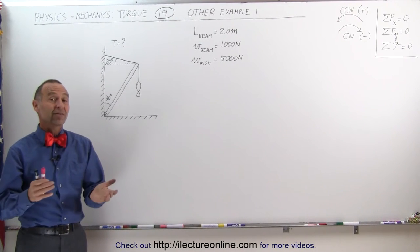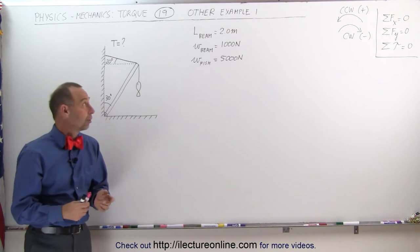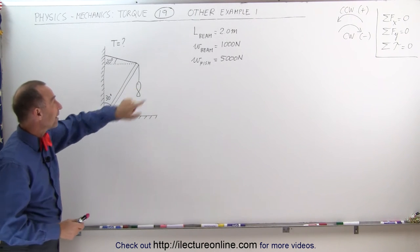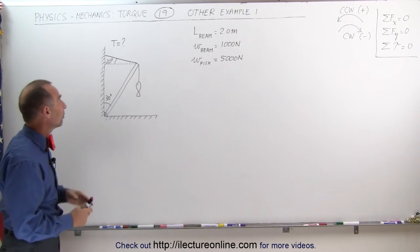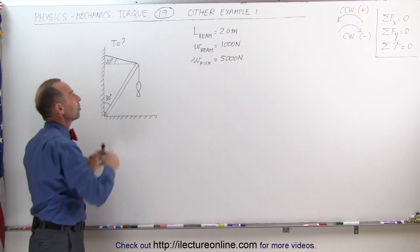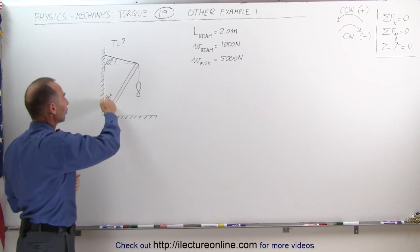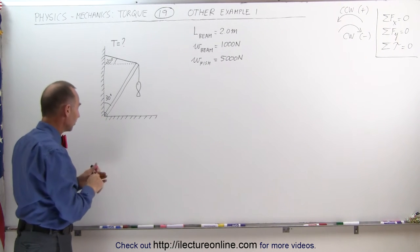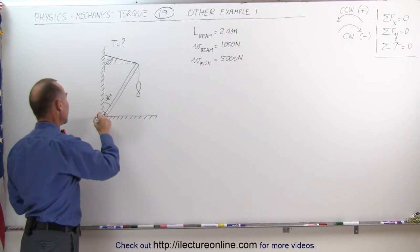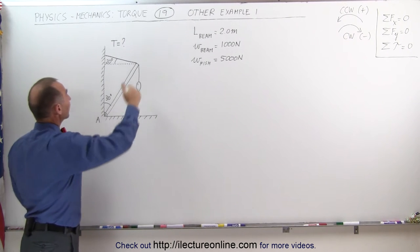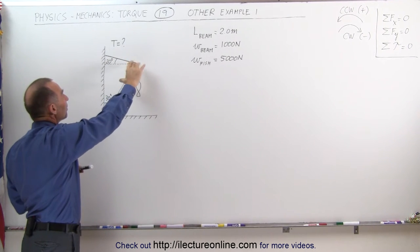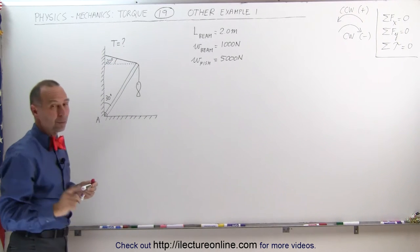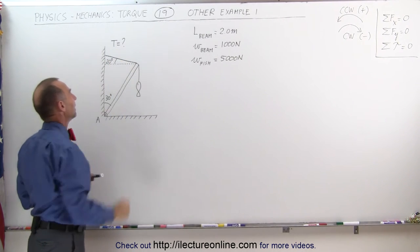Welcome to ElectronLine. Here's our next example of how to use torque to solve a problem like this. We have a very big fish with a weight of 5,000 newtons hanging from the end of this beam. The beam is 2 meters long and it makes an angle of 30 degrees relative to the vertical, attached to the hinge at the bottom — let's call that pivot point A. Then we have a cable holding up the beam and the fish at an angle of 20 degrees relative to the horizontal. We're trying to find the tension in the cable.